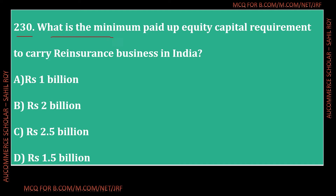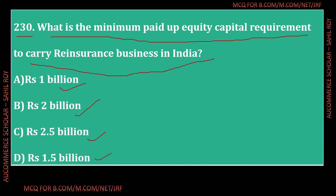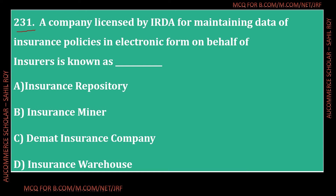Question number 230: What is the minimum paid-up equity capital requirement to carry the reinsurance business in India? Option A - 1 Billion, Option B - 2 Billion, Option C - 2.5 Billion, Option D - 1.5 Billion. The correct answer is Option B - 2 Billion rupees is the minimum paid-up equity capital requirement to carry reinsurance business in India.